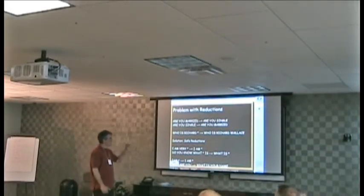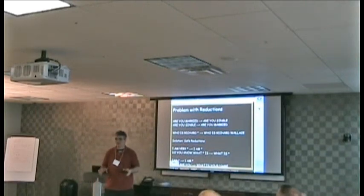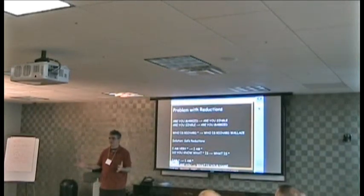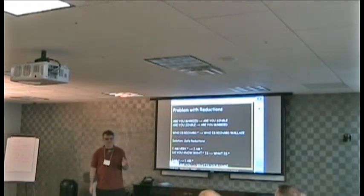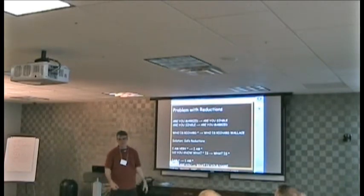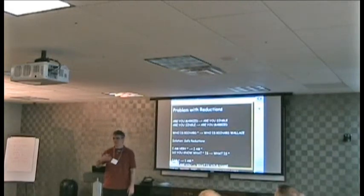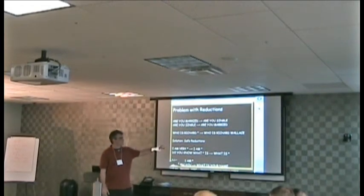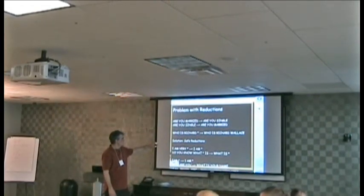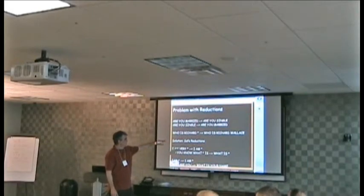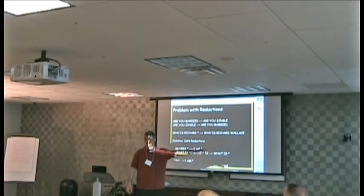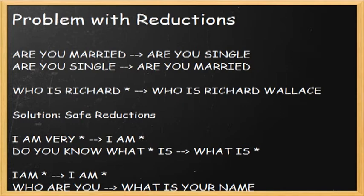Another example: in the original Alice bot, a lot of people were saying 'who is Richard Wallace?' and misspelling the last name. So a category was created so that 'who is Richard anything' reduces to 'who is Richard Wallace.' But if someone else's bot doesn't include a response to 'who is Richard Wallace,' the input will continuously activate the same pattern over and over again.